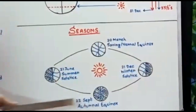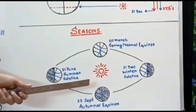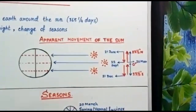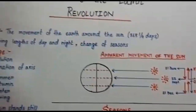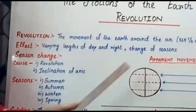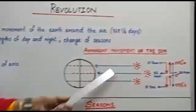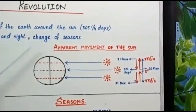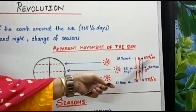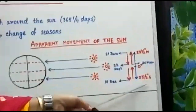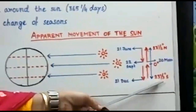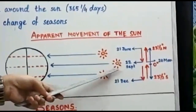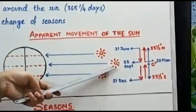Before going to the season change, I will explain the apparent movement of the sun. We all know that the earth has two motions — rotation and revolution — but the sun also has an apparent motion. The limit of that motion is 23.5 degrees north, that is the Tropic of Cancer, and 23.5 degrees south, that is the Tropic of Capricorn.